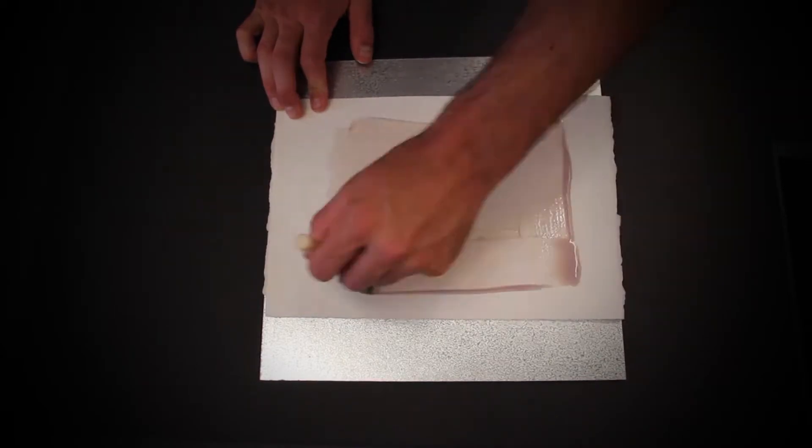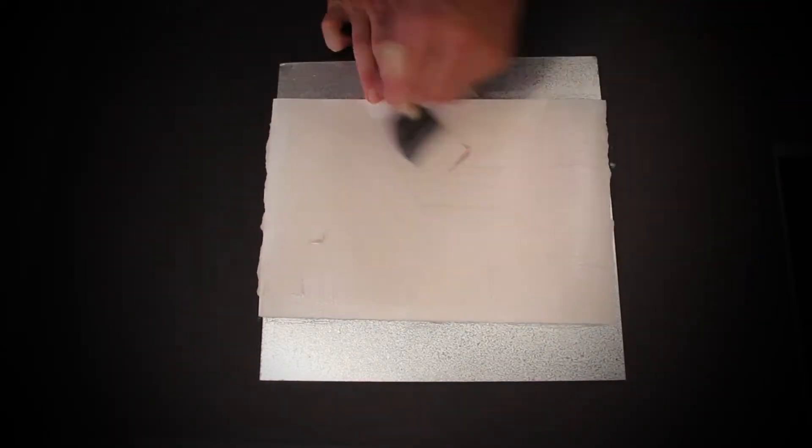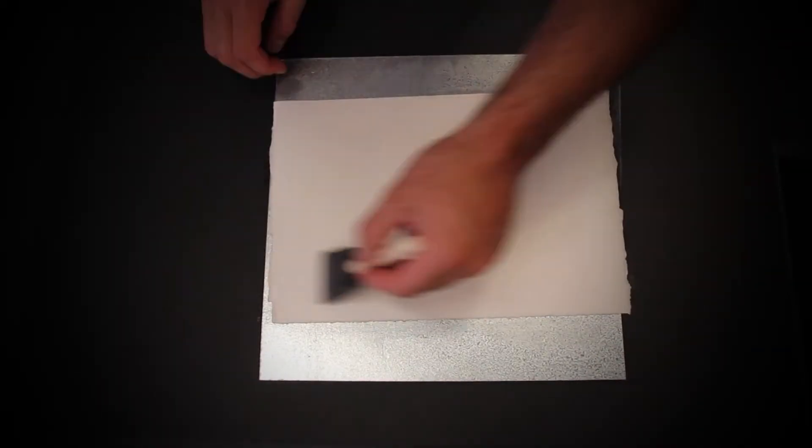Solar Fast also works great on paper. Heavy artist or watercolor papers work best. Same as before. Apply the dye, place the image, and expose to sunlight.